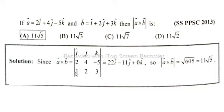2 times 2 is 4 minus 4 equal to 0, 0k. So a cross b absolute is equal to 22 whole square